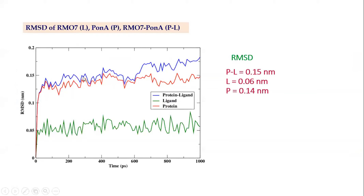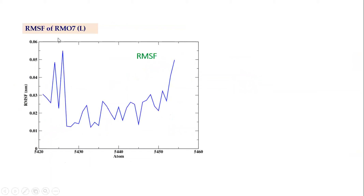We drew graphs of root mean square deviation (RMSD). For the ligand, the RMSD is 0.06 nm; for the PonA1 protein, it is 0.14 nm; and for the complex of Withanolide A with PonA1 from Mycobacterium tuberculosis, the RMSD is 0.15 nm. The root mean square fluctuation (RMSF) is also represented graphically, with the fluctuating phase extending from the higher to lower region as shown in the figure.